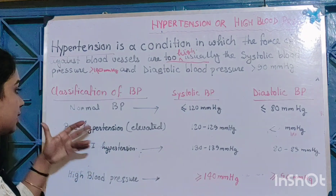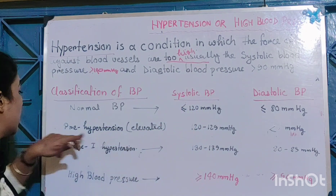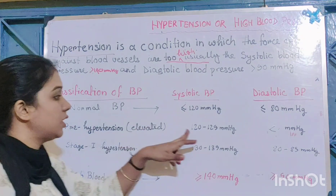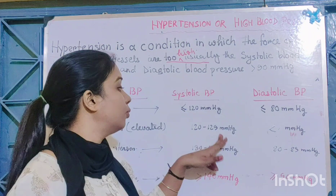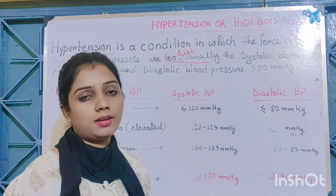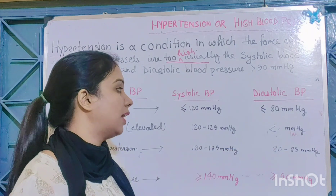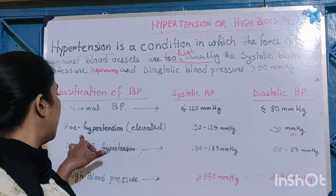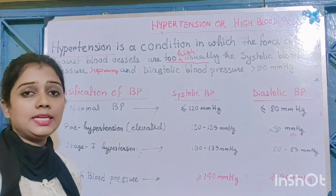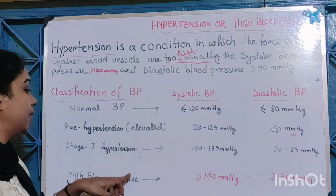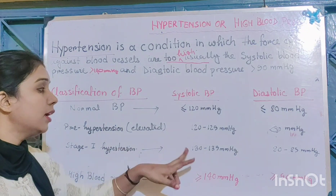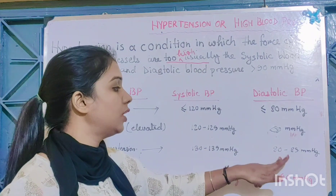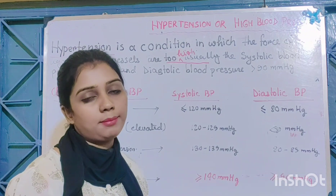Pre-hypertension, which is also called elevated hypertension, is when systolic blood pressure is 120 to 129 mmHg and diastolic blood pressure is less than 80 mmHg. Stage 1 hypertension is when blood pressure is 130 to 139 mmHg systolic and 80 to 89 mmHg diastolic.